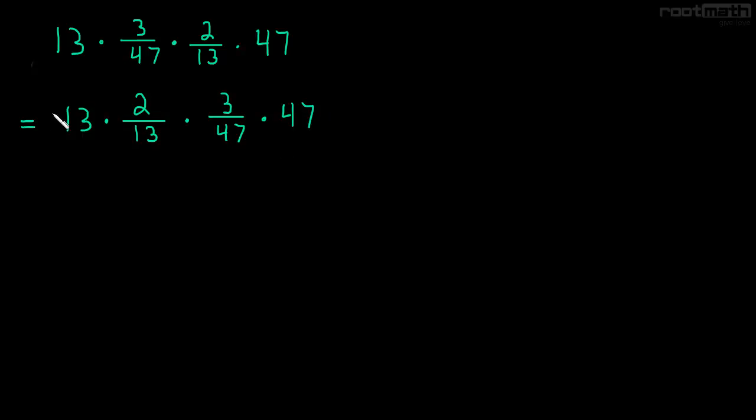Also, multiplication is associative, which means we can group it any way we want. So, let's not only put them next to each other, but let's actually group them. And now, we know the way fractions multiply. That's something we've already learned. 13 times 2 over 13 is just 13 times 2 over 13. We get something similar over on the right-hand side. And now, we can just cancel.